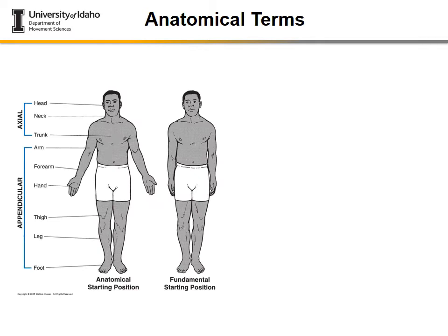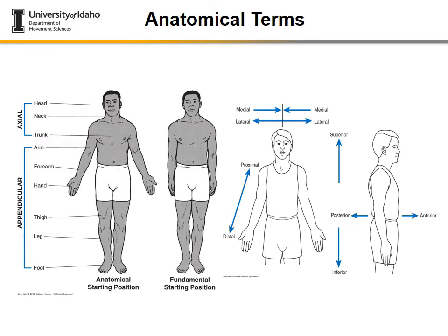Going forward, it's important to understand a number of anatomical terms. This is where functionality comes in — we'll be able to describe human motion using the same terminology. Please make sure you know and understand all these terms, because in the following slides we'll illustrate motion in different planes about different axes. Spend time with the PowerPoint slides and add all these terms to the terminology sheet.